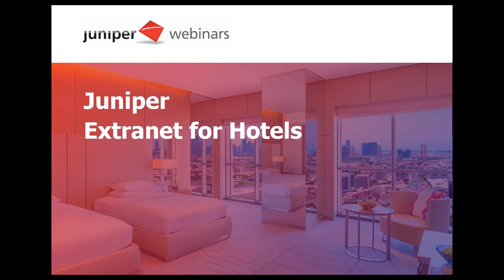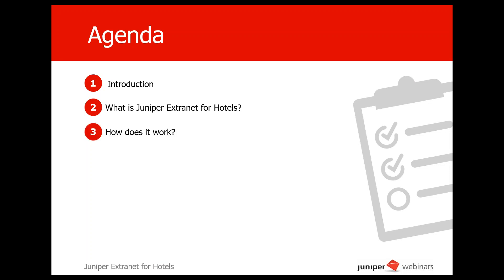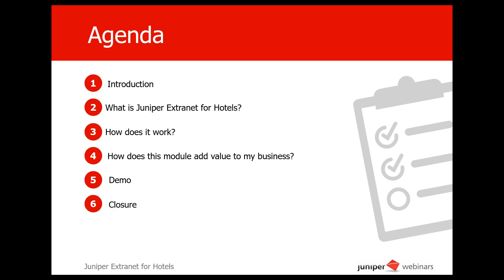Also, for those of you not following this webinar in real time, at the end of the presentation you will find our contact details and we will be glad to help you with any questions you may have. So we'll start by the agenda: the introduction, what is Uniper Excellence for Hotels, how does it work, how does this model add value to your business. We'll make a very short demo explaining how it works, as it's very similar to directly contracted accommodation that we covered in the webinar we did before this. So this will be really short, and we will make a closure.